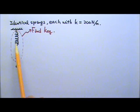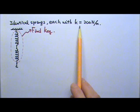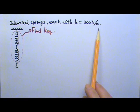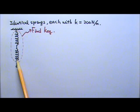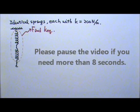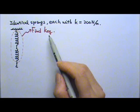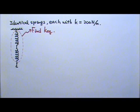Now I have the same two identical springs, each with K equals 200 N/m. This time they are connected in series. We want to find the equivalent spring constant for this combination. Again, I'm going to first derive a general equation for the equivalent spring constant.